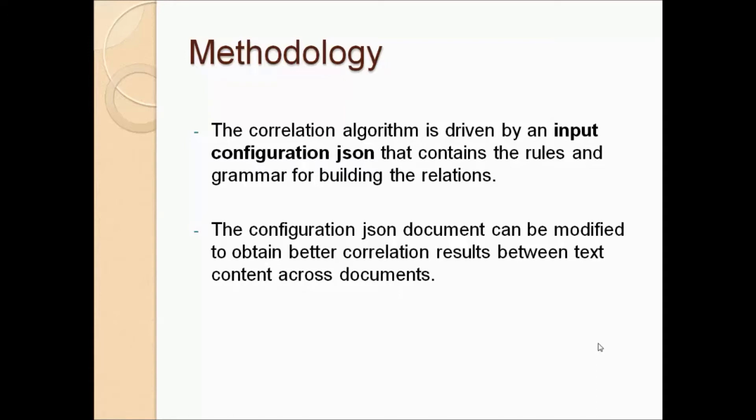The correlation algorithm is driven by an input configuration JSON that contains the rules and grammar for building the relations. This JSON configuration file can be prepared by a domain expert. The configuration JSON document can be modified to obtain better correlation results between the text content across documents.